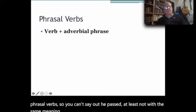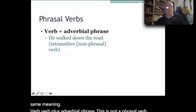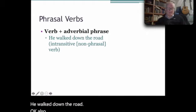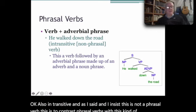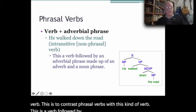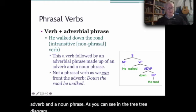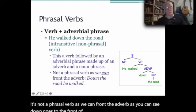Now a verb plus adverbial phrase. This is not a phrasal verb. 'He walked down the road.' Also intransitive. And as I said, and I insist, this is not a phrasal verb. This is to contrast phrasal verbs with this kind of verb. This is a verb followed by an adverbial phrase made up of an adverb and a noun phrase, as you can see in the tree diagram. It's not a phrasal verb, as we can front the adverb. 'Down' goes to the front of the sentence. 'Down the road he walked.'